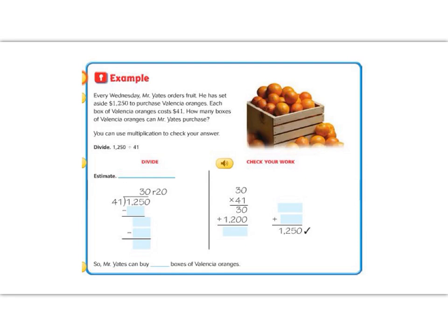So the first thing we always do is we estimate. We're going to round 41 to 40, and then we're going to look at the first two numbers and make sure that 4 goes into it. The first two numbers are 12, so I'm going to round. 4 goes into 12, so I'm going to round to 1,200. 4 goes into 12 three times, and I have one zero left over. So I'm going to say that he can order about 30 pounds of Valencia oranges.